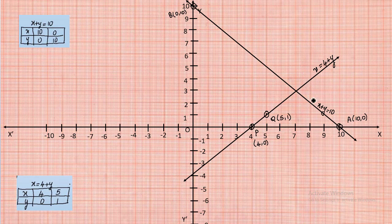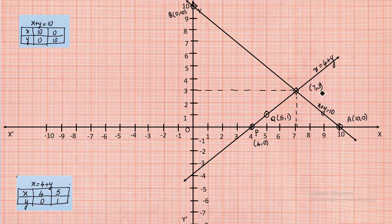We observe that the two lines intersect at a point. Dropping a perpendicular from this intersection to the x-axis gives a value of 7, and to the y-axis gives a value of 3. So the intersection point is at x = 7 and y = 3. This forms the unique solution for the two equations x = 4 + y and x + y = 10.